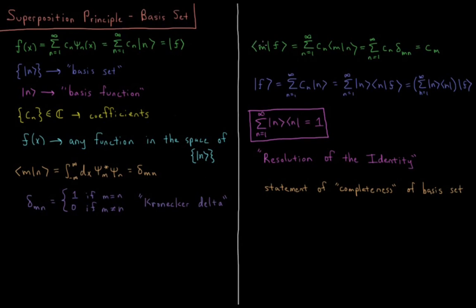Let's look at what this overlap integral would be. That is the integral from minus infinity to infinity with respect to x of psi star_m times f of x, where f of x is represented as a linear combination of all the basis functions. That equals the sum from n equals 1 to infinity — the ket vector f is the sum from n equals 1 to infinity of c_n times ket n. Multiplying by the bra vector m and factoring out c_n gives us c_n times the overlap bracket m|n.